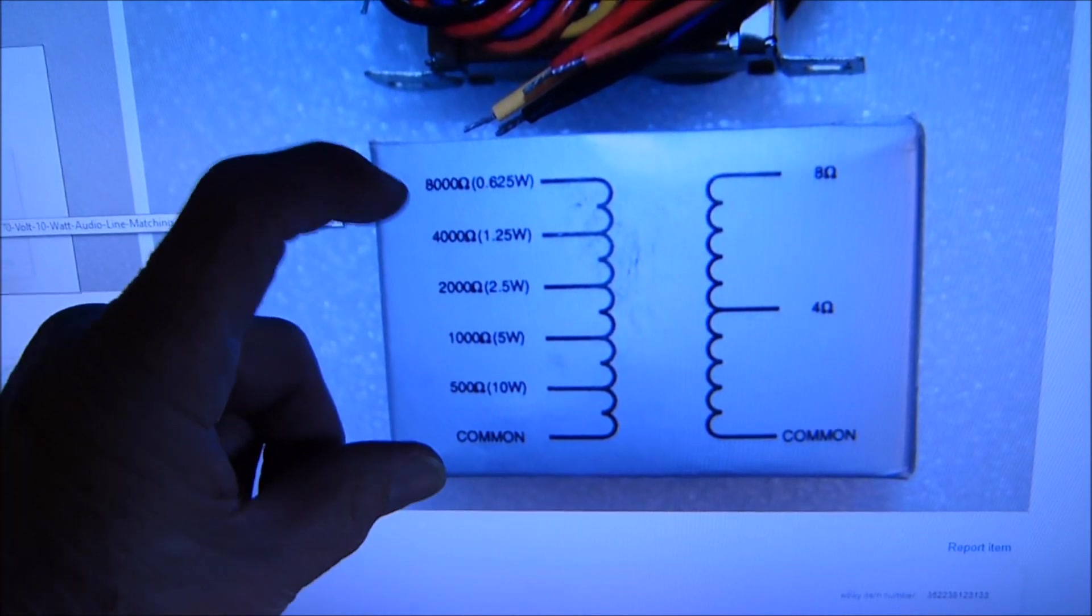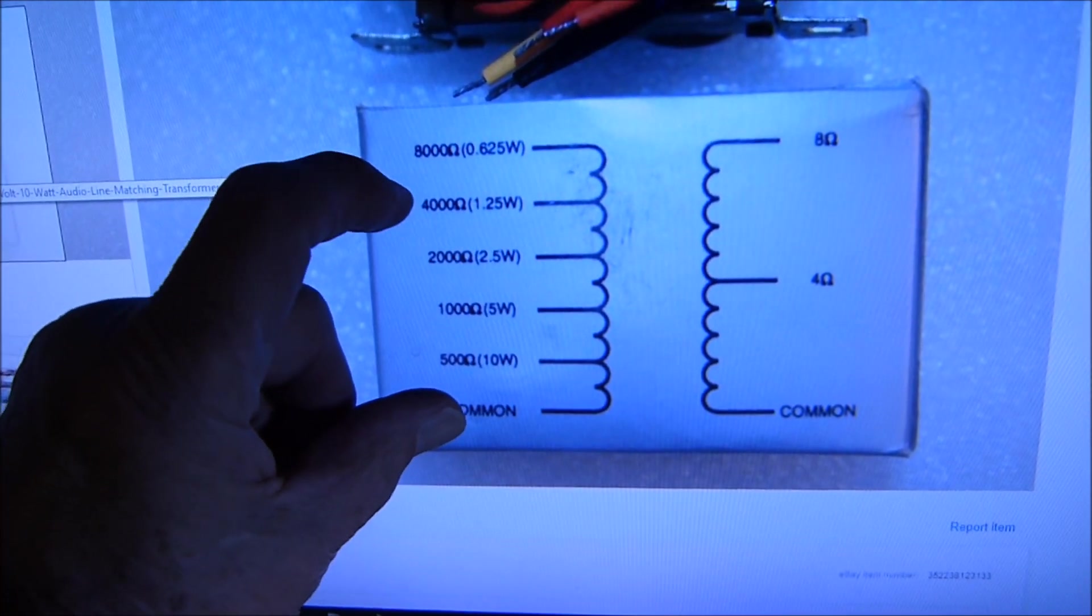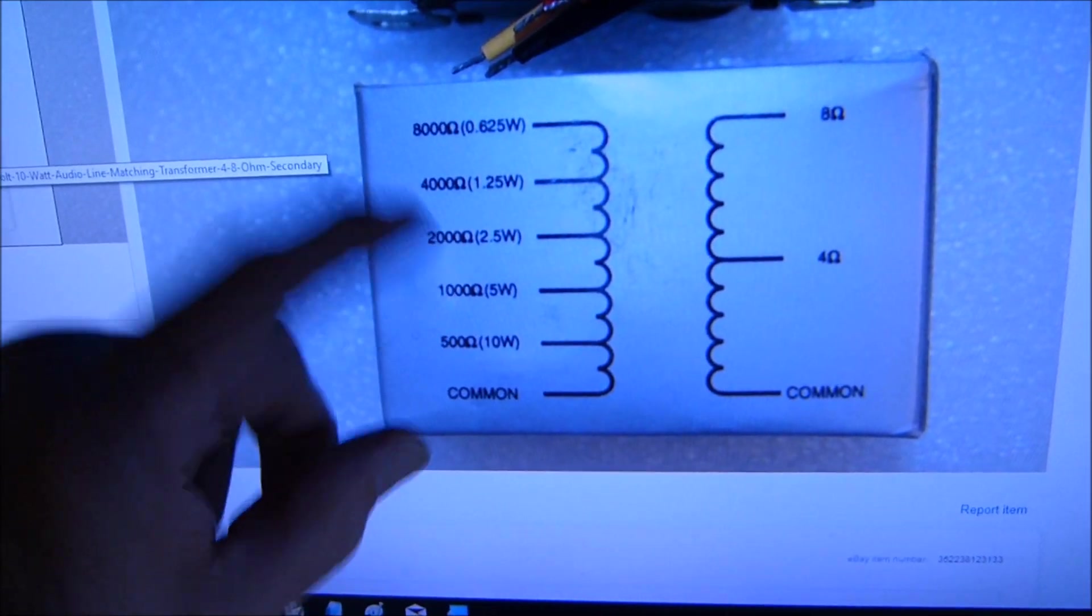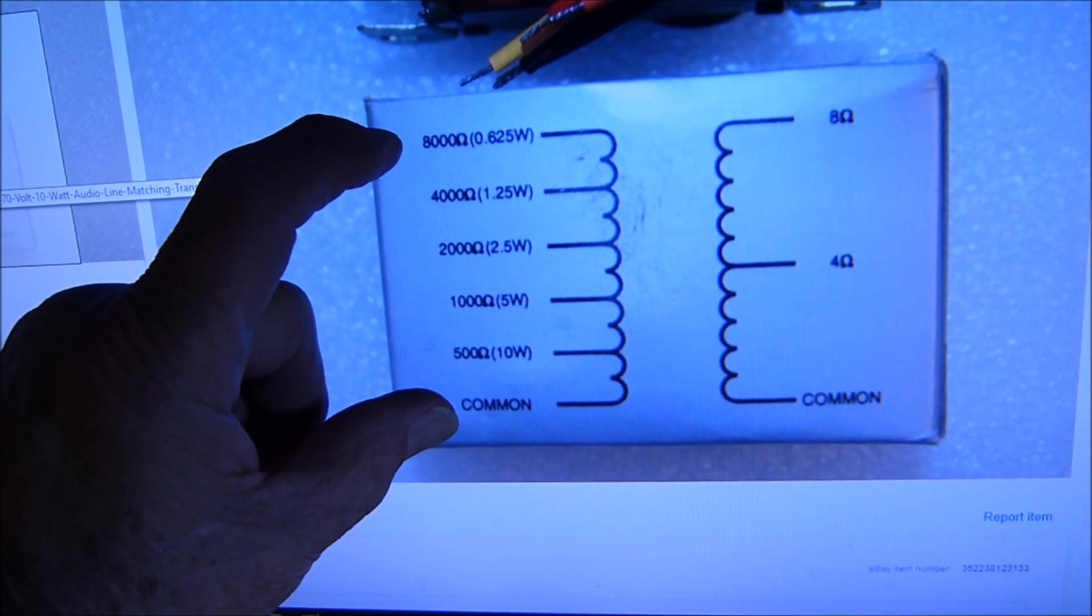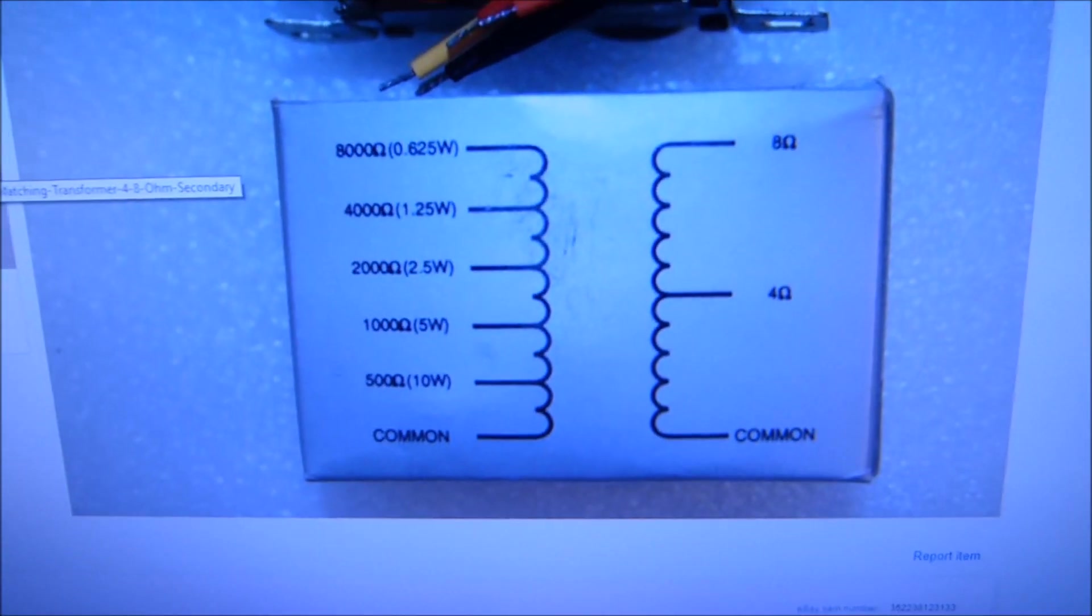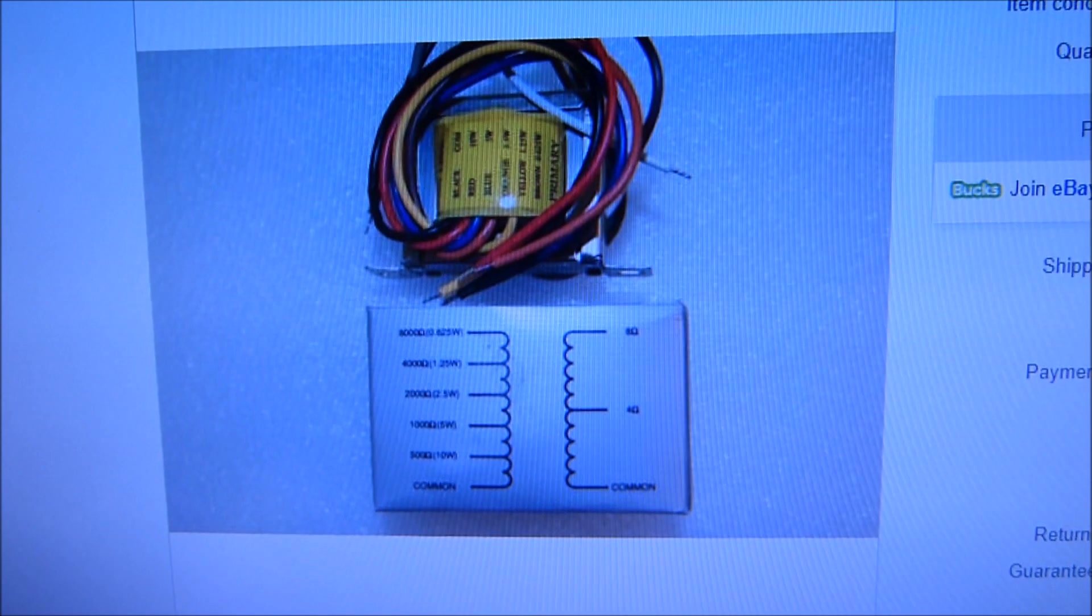So if you want to make a push-pull transformer out of this, you'd put common and 4,000, and this would be the center tap. Or again, this would be an 8,000 ohm load with the center tap right there. There they are, eight dollars apiece. I can't get over it.